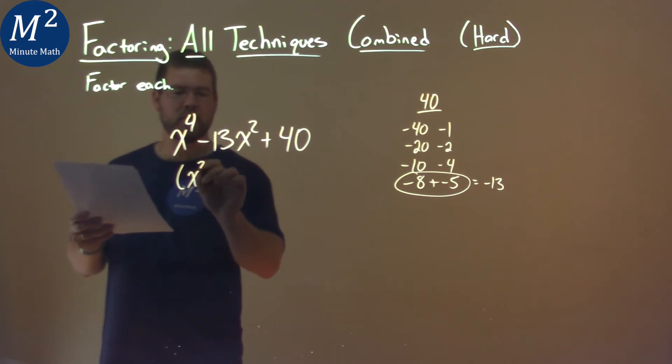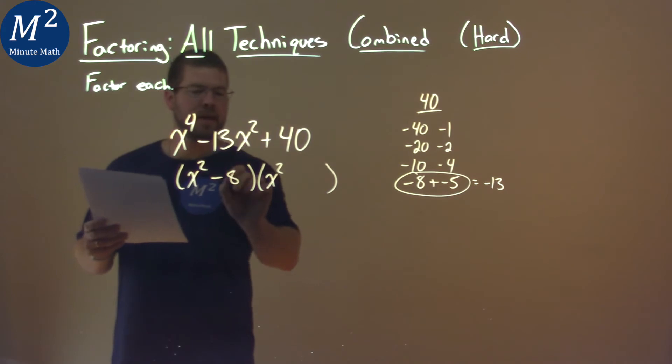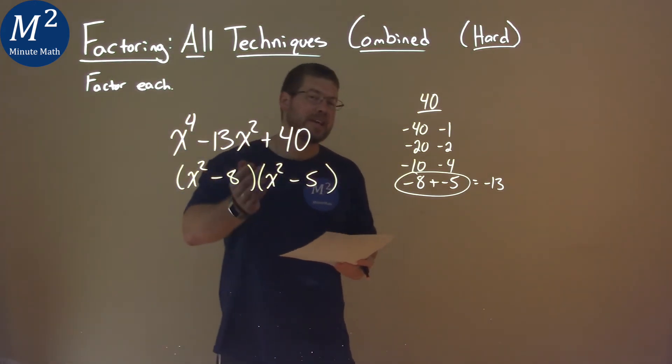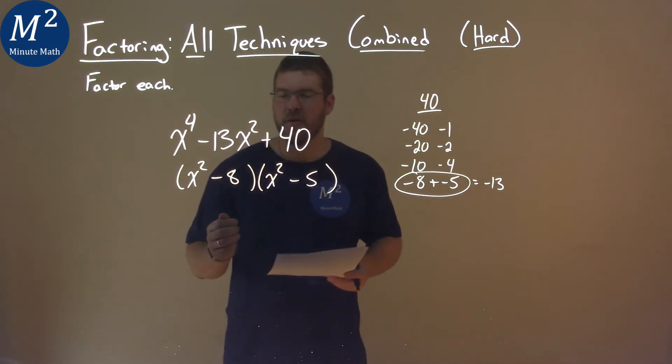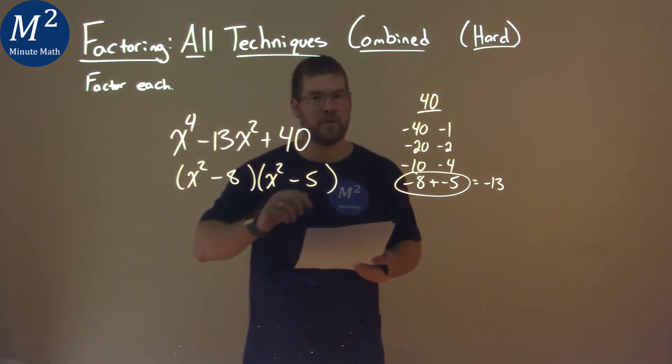We have x squared in this form, like so. X squared minus 8, and then x squared minus 5. We can't factor this anymore, so our final answer is (x squared minus 8) times (x squared minus 5).